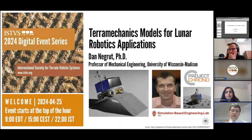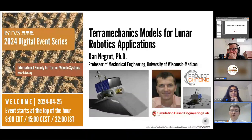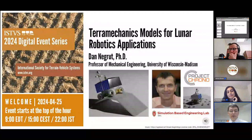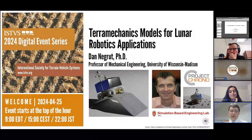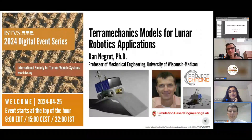His scientific interests are in computational science. He established, along with Radu Serban, the simulation-based engineering lab sponsored by the National Science Foundation, NASA, U.S. Army Research Office, Department of Transportation, Department of Energy, and several industry partners. His research projects focus on simulation in robotics, terra mechanics, high-performance computing, multi-body computational dynamics, fluid-solid interaction, computer vision, and computer graphics. Dan Negrut is one of the technical leaders of Project Chrono, an open-source multi-physics simulation platform used in real-life projects such as NASA Viper Design and the Artemis mission. Dan, welcome. Let's hear about your work on terra mechanics models for lunar robotics applications.